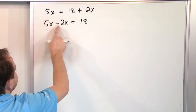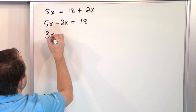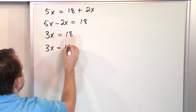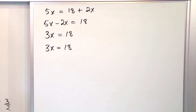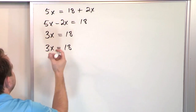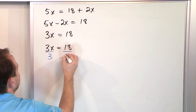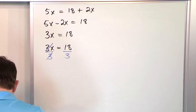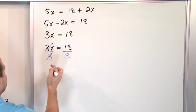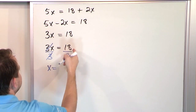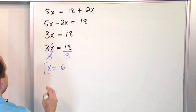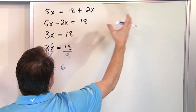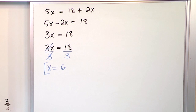Now we have 3x equals 18. Dividing both sides by 3 gives x equals 6. You can check by substituting 6 in for x on both sides and confirming both sides are exactly equal.